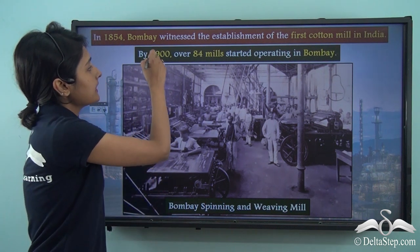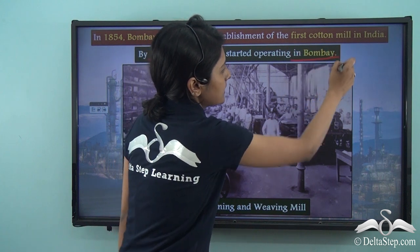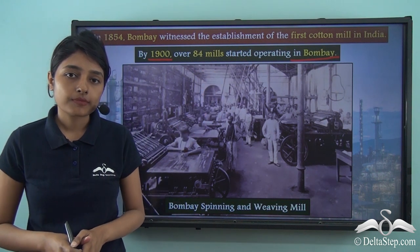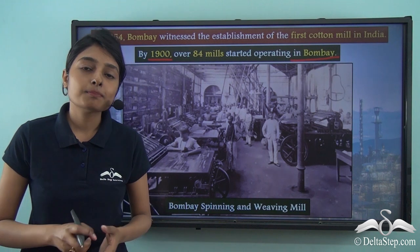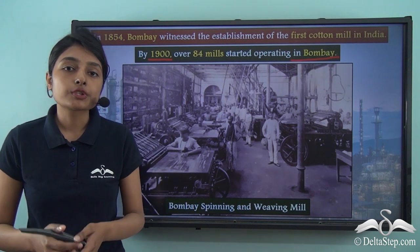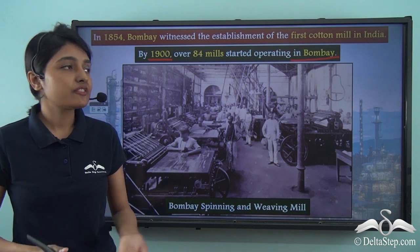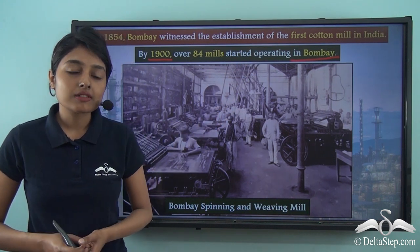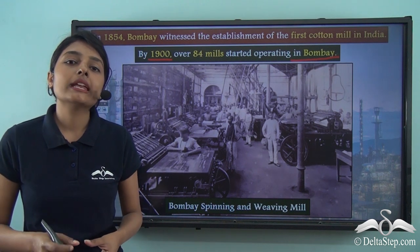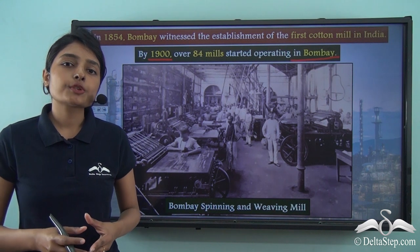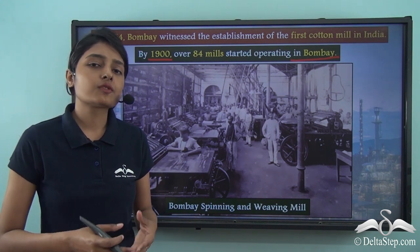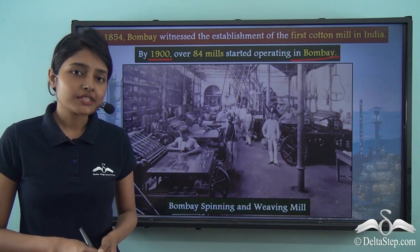By the year 1900, over 84 mills started operating in Bombay. There is a very particular reason behind the growth of cotton mills in Bombay. Bombay is located in the western part of the Indian subcontinent, close to regions that have black soil and produce cotton, which is why it was easy for these cotton mills to get access to raw materials — that is, raw cotton. These cotton mills also provided employment to many workers, who were employed as weavers, spinners, dyers or in different capacities.